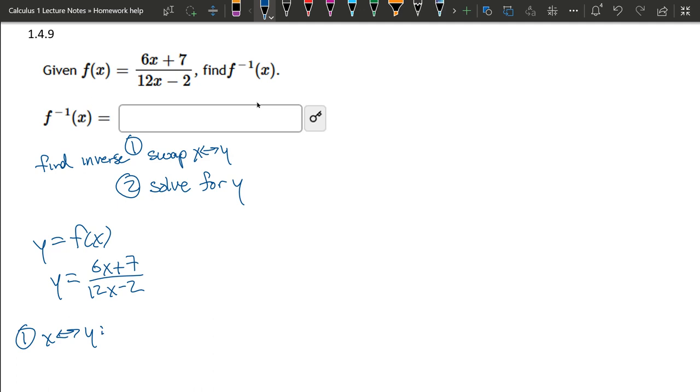Swap x with y. And that gives us x equals 6y plus 7. Now you have to swap all x's and y's. So this used to be another x, and it's going to become a y minus 2. So we swapped x and y.